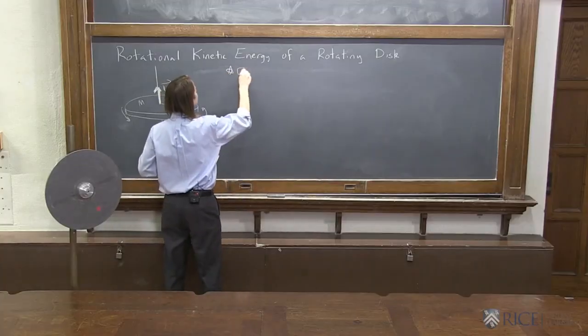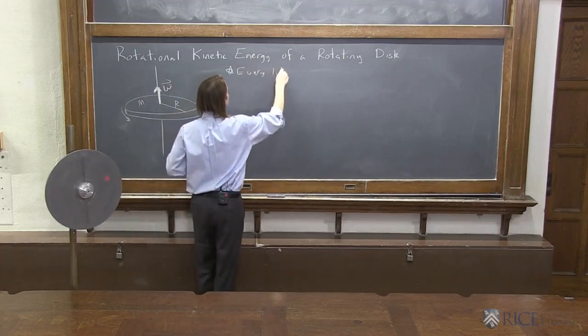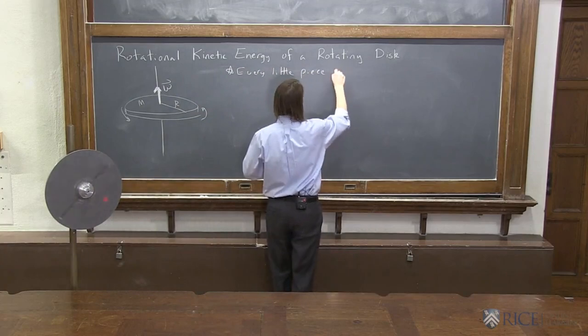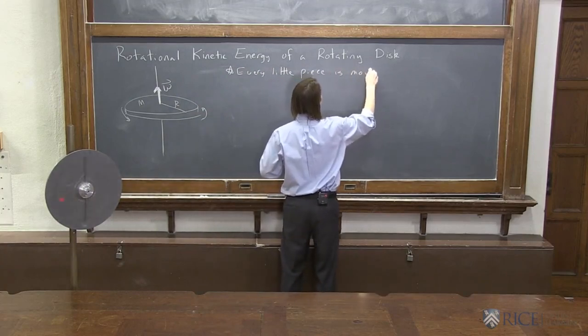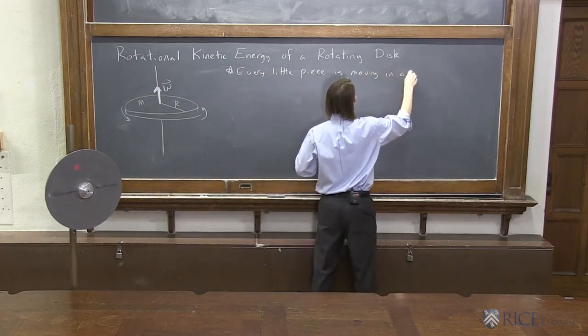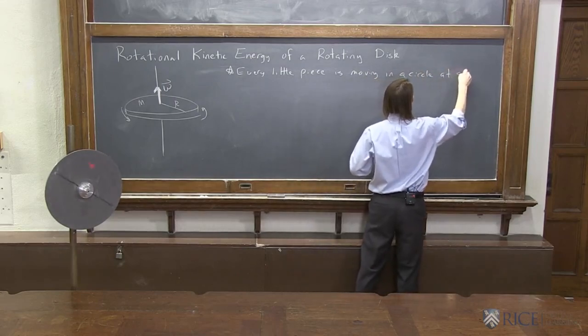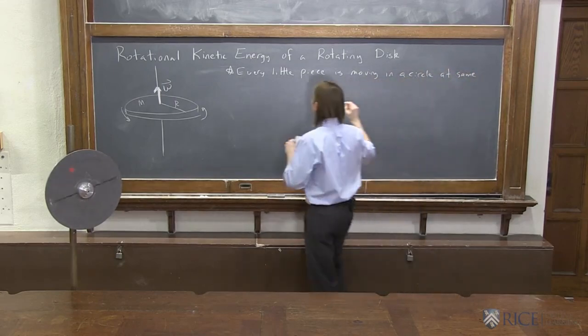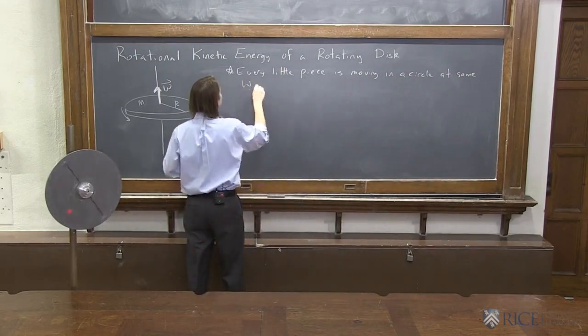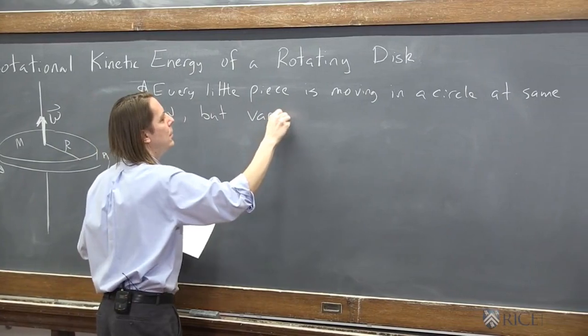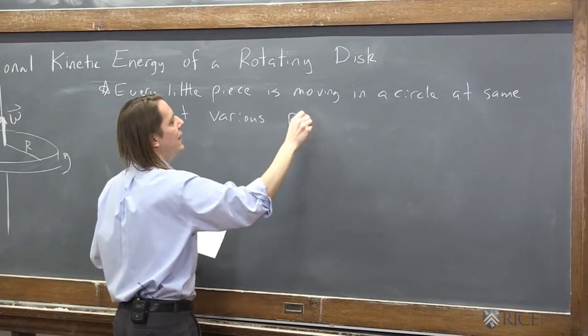So what we're going to do, every little piece is moving in a circle. Anywhere I put that i, it moves in a circle. And they're all at the same omega, right? They're all going the same angular velocity, but they're going at various radius and speeds.